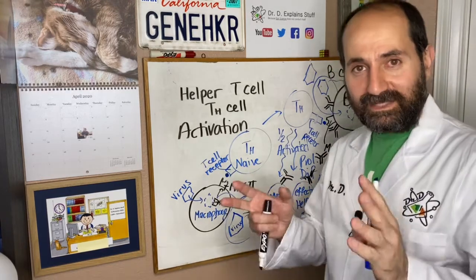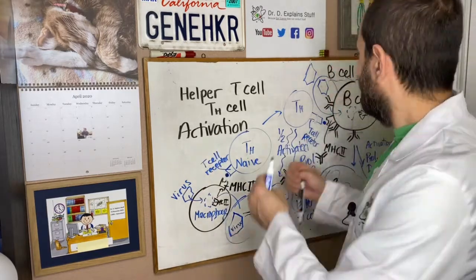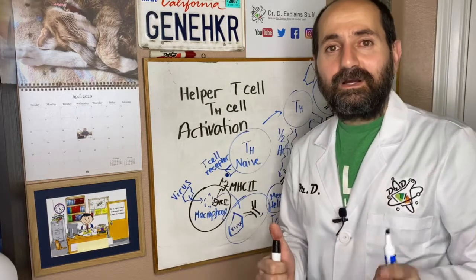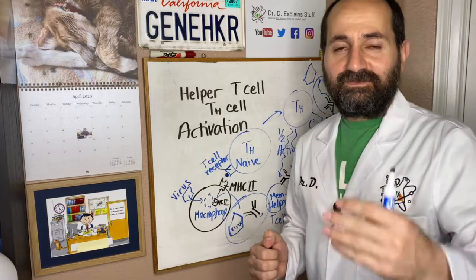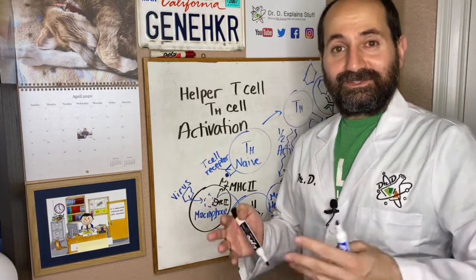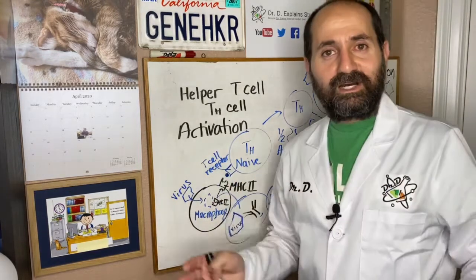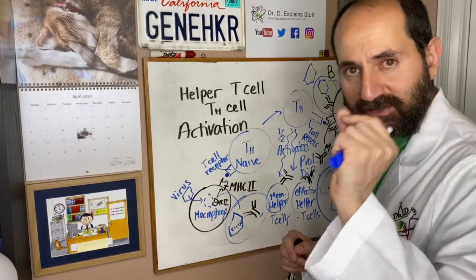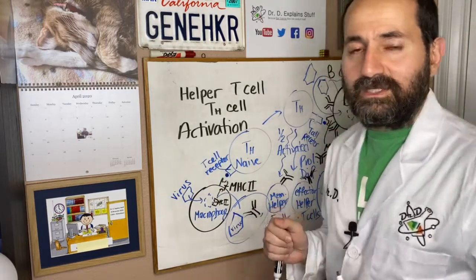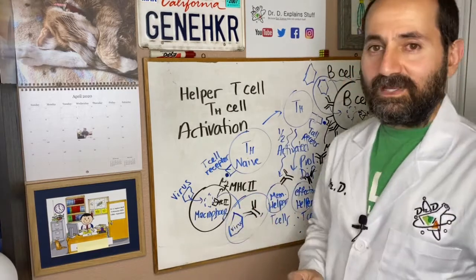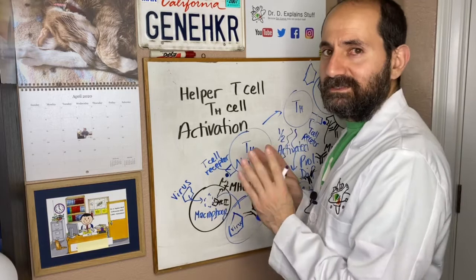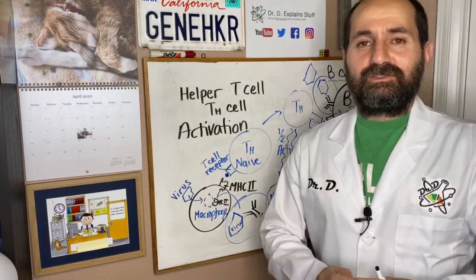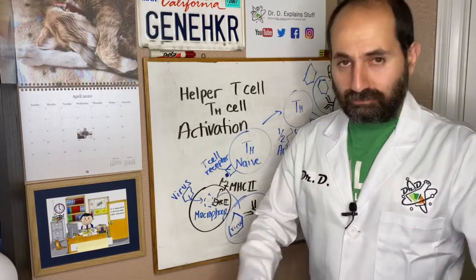This is how helper T cells are activated, how B cells are activated, how opsonization works, and how this feedback loop works. This is how adaptive immunity works in your body — how once you've been infected by a particular virus, you are immune to that strain in the future, because memory cells linger in your body for years, sometimes decades, and remember that virus. Please understand this is a really simplified version; an immune response is very, very intricate and there's much more to it, but this gives you a broad perspective.